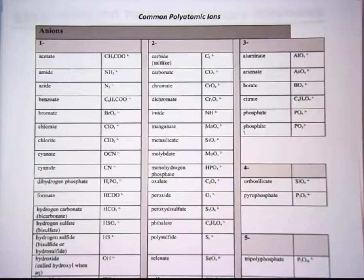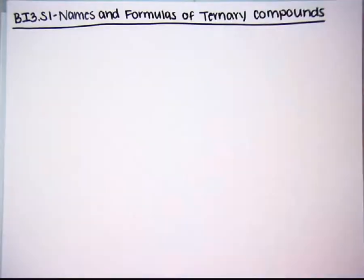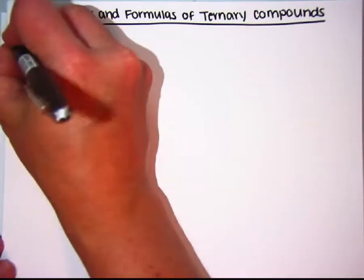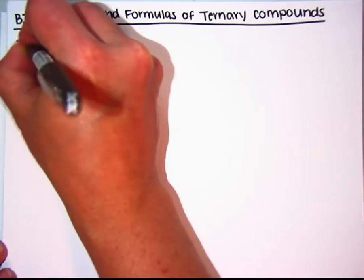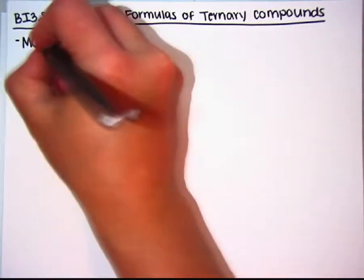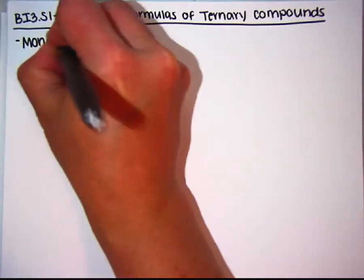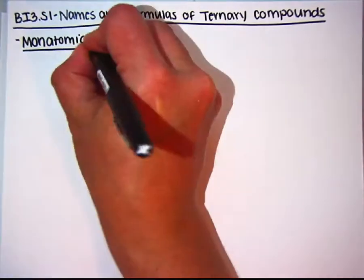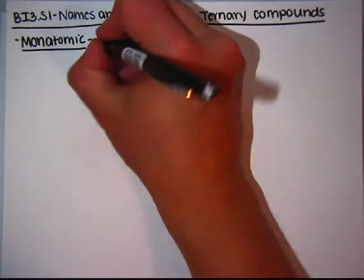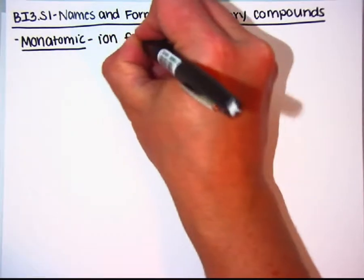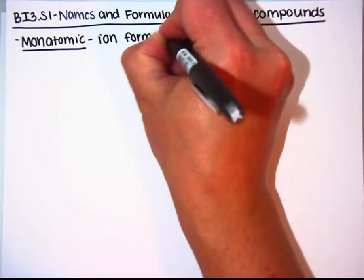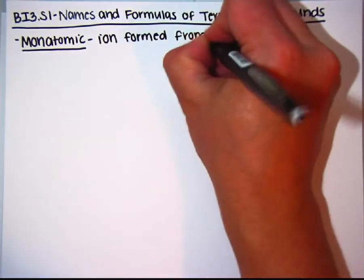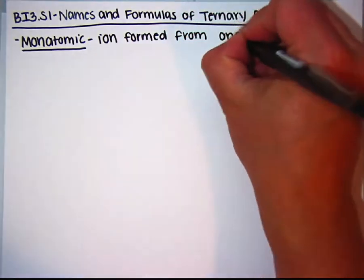What you're going to need is this page from your resource packet. It says Common Polyatomic Ions at the top. First, let's talk about polyatomic. To get to that, I'm going to explain what monatomic means. If something is monatomic — mono meaning one — this is an ion formed from only one atom.